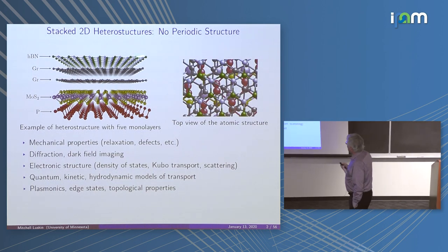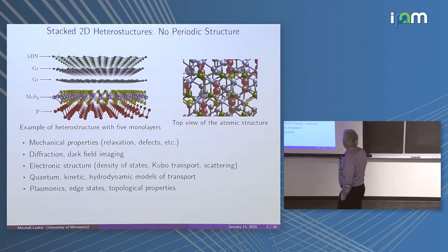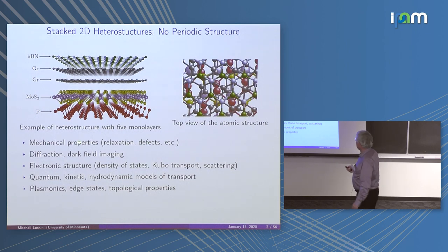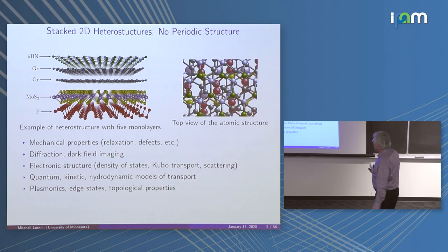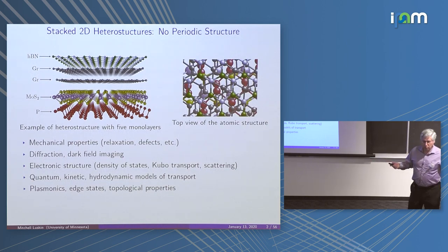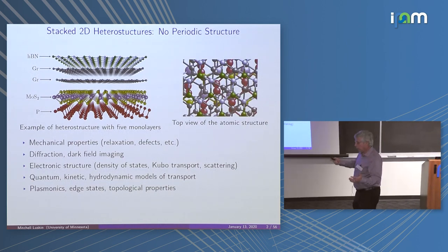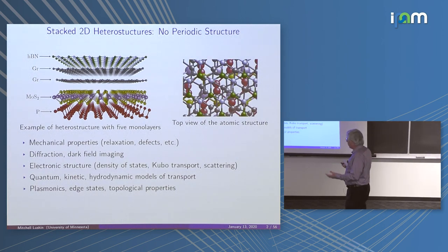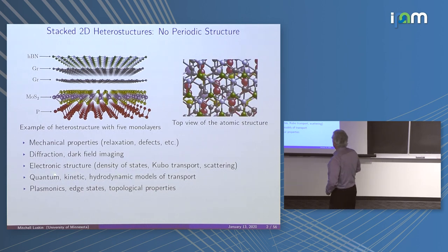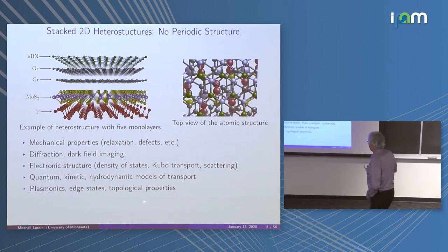We've confronted this problem in many different areas. We've used this concept of configuration space — which I'll talk about — to study mechanical properties. Paul Cazeaux will discuss this after me. Another project is the problem of diffraction and dark field imaging for an incommensurate heterostructure, because the standard procedure is Fourier transform and inverse Fourier transform, and we don't have a true periodic structure. Next I'll talk about density of states and Kubo in the context of incommensurate heterostructures.